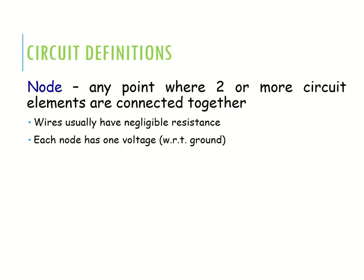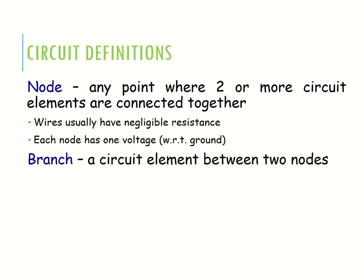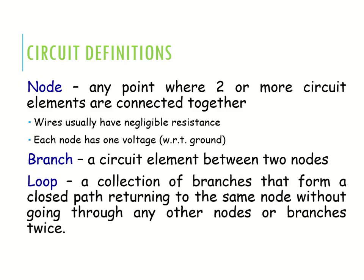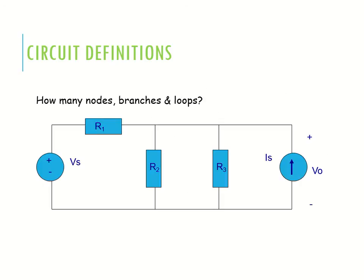Now, circuit definitions. A node is any point where two or more circuit elements are connected together. Wires usually have negligible resistance, and each node has one voltage with respect to ground. A branch is a circuit element between two nodes. A loop is a collection of branches that forms a closed path returning to the same node without going through any other node or branch twice.